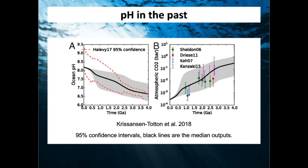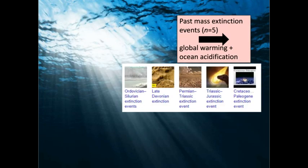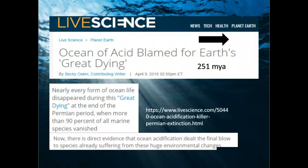There have definitely been times when pH was lower than today, but those were periods of mass extinctions — and that wasn't good for anybody. The two periods that come to mind are 250 million years ago and 200 million years ago, the worst extinctions of all time. All five past mass extinction events have had both a global warming component and an ocean acidification component — both things happened together.